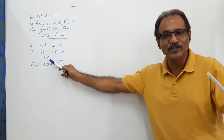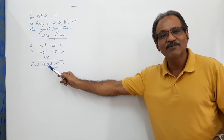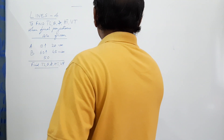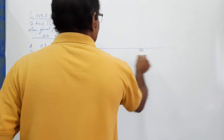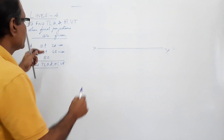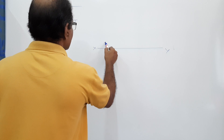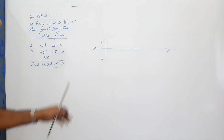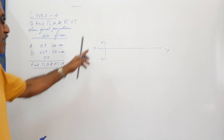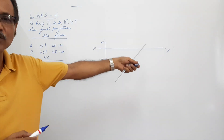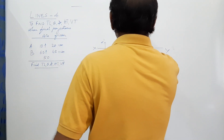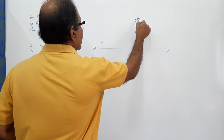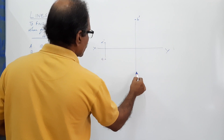A line like this indicates draw the projections, and below that I will write what you have to determine. Okay, let's draw. Draw an XY line. Locate a-dash and a: a-dash 10mm above HP and a 20mm in front of VP, i.e., below XY. Then 50mm away on another projector, locate b-dash 60mm above and b 45mm in front below.